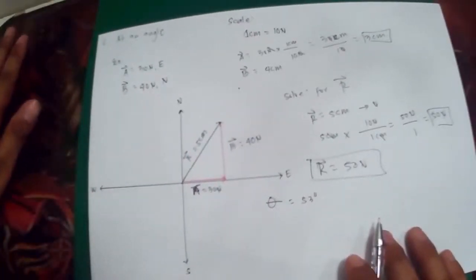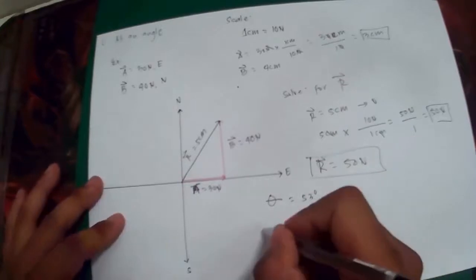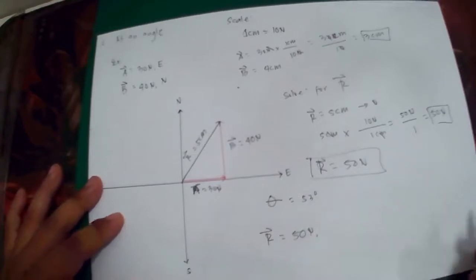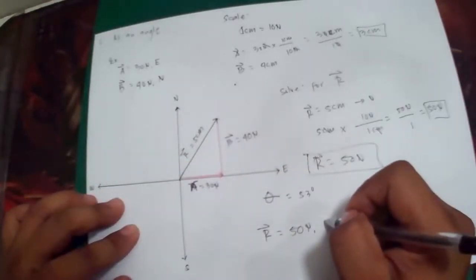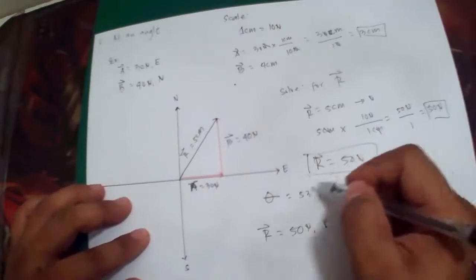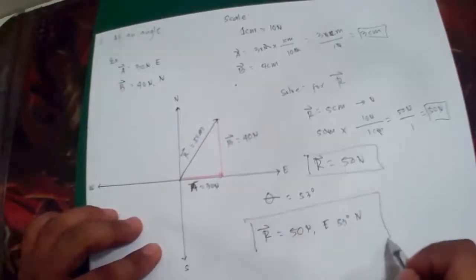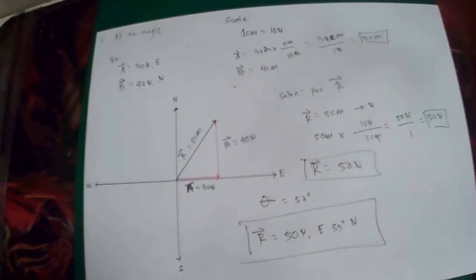Now to give the final answer, or to express the final answer for this case number 3, we just simply write: resultant vector equals 50 newtons, and then get the first direction, east, and then get the angle, 53, and then the last direction, which is north. So this is now the final answer for vectors that are in a perpendicular orientation. For vectors A and B, the resultant vector is 50 newtons east 53 degrees north.